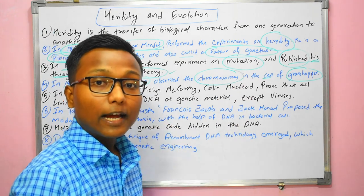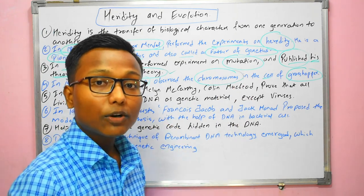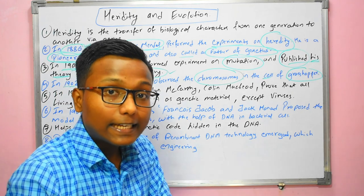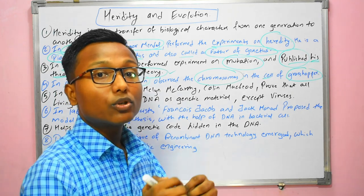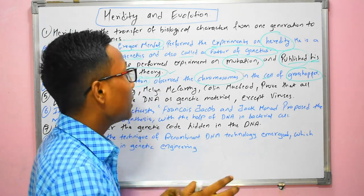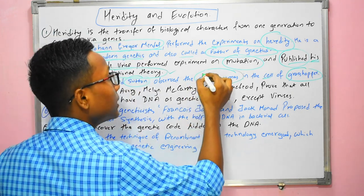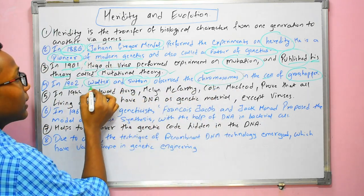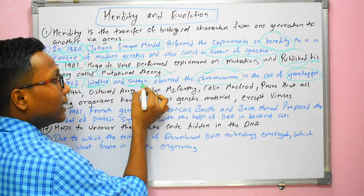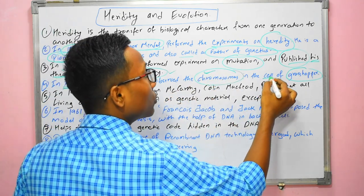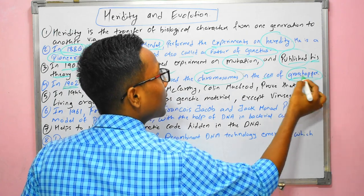What is a chromosome? DNA is associated with chromosomes. The chromosome was discovered by Walter and Sutton. He performed his experiment using grasshoppers.